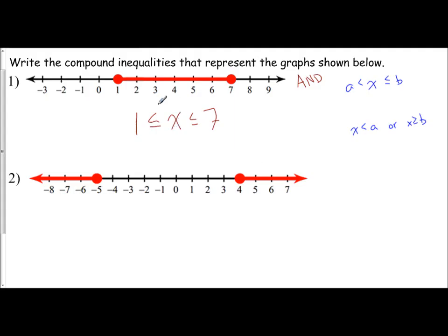Our solution is between one and seven. The circles tell us that it is or equal to for both of these. You notice that your inequalities point the same direction for an and compound inequality.